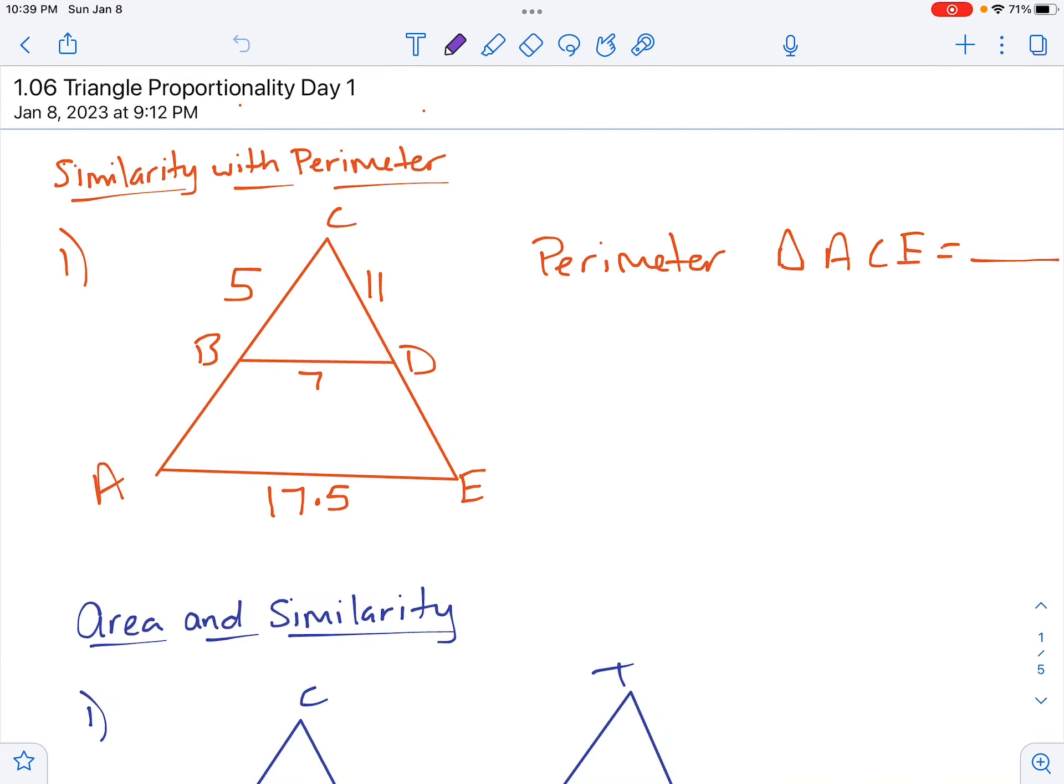We're going to look at some more rules with triangle proportionality. We're still looking at similar triangles, but we're going to apply it a little bit further. For this first one, I want to look at similarity with perimeter. Anytime you have two similar triangles, you can use similarity to find the perimeter of one of the triangles. Instead of having to find multiple things and then add the sides together, we can just jump straight to finding the perimeter.